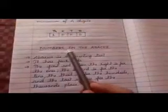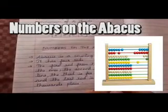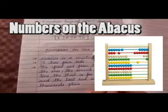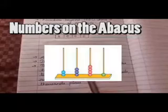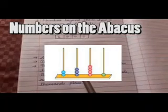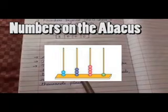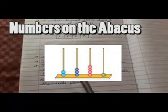Next is about abacus. Numbers on the abacus. All of you have seen an abacus. It is a counting tool. It has four rods. The first rod from the right is for the ones, and the second is for the tens. The third is for the hundreds, and the last rod is for the thousands place.